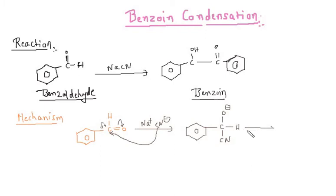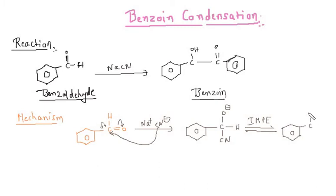Now there is one step taking place called as intermolecular proton exchange — I can write it as IMP, intermolecular proton exchange. And finally we are having this particular product: C-OH, H, and these both electrons — this one and this one — are kept by carbon, and that carbon gets a negative charge.